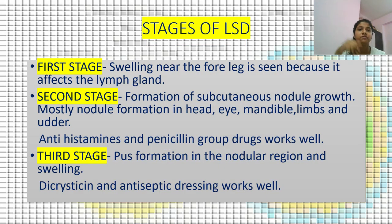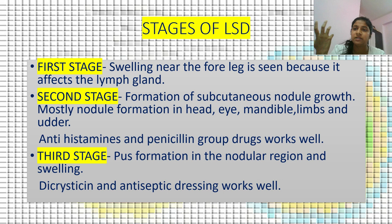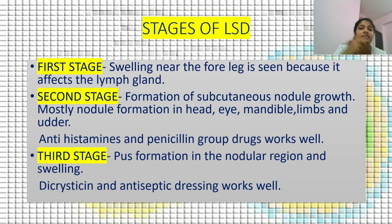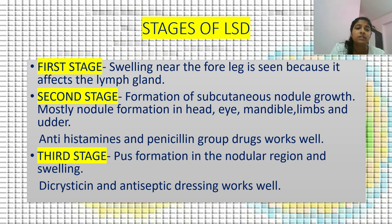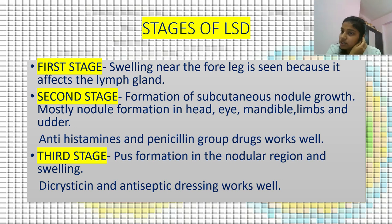Stages of lesions: The first stage is swelling near the foreleg, because it affects the lymph glands — mainly the subscapular and pre-femoral lymph glands. Second stage is formation of subcutaneous nodule growths, mostly in the head, eye, mandible, limbs and genitalia; in this stage antihistamines and penicillin group drugs like procaine penicillin and oxacillin work well. Third stage is pus formation in the nodular region and swelling; Dicrysticin containing procaine penicillin and antiseptic dressing work well in this stage.